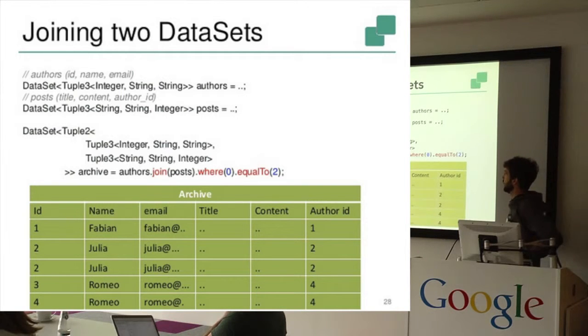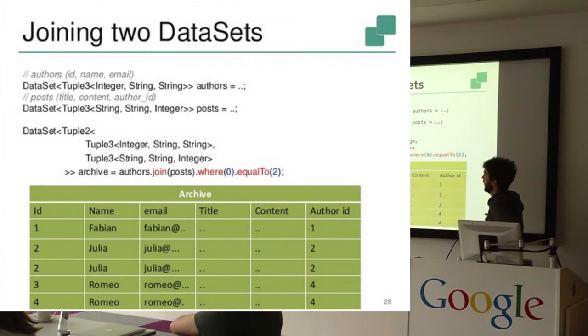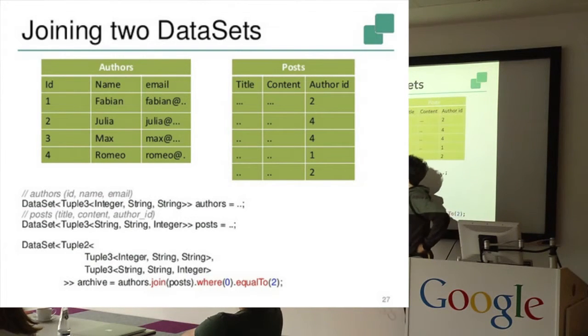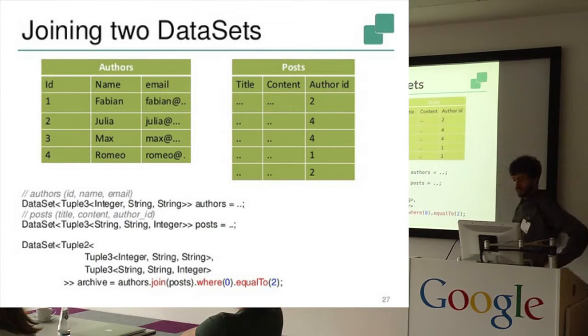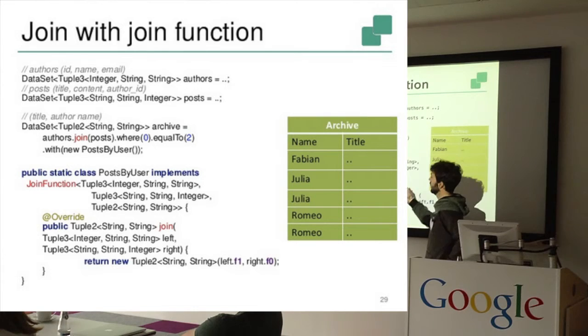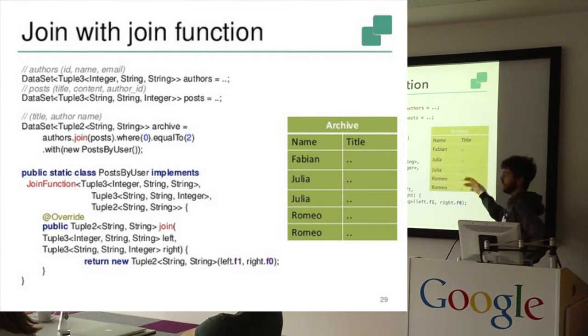And yeah, this is what the result would look like. So we get actually, because we didn't specify like how exactly the join should be performed, we get a tuple 2 with both data sets where they matched. And you can see here what I wanted to demonstrate you about joins, that for example Max here, he's in the authors list, but he didn't write a post. So he actually does not appear in the results because it's an equi-join. Yeah, you can also specify actually a join function, which is here this interface join function, which actually lets you specify the output type. So you might only want to put out name and title, and not like we had here the whole two data set columns.